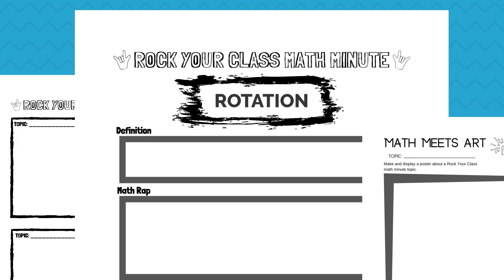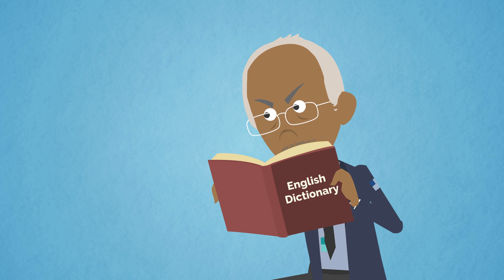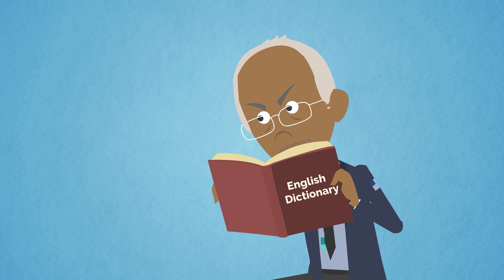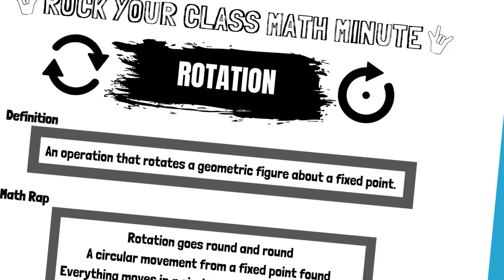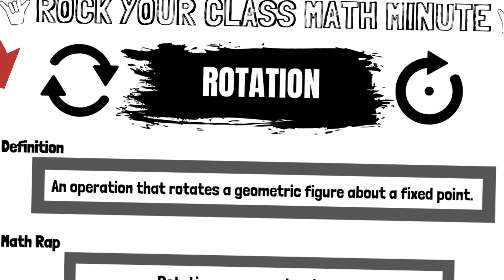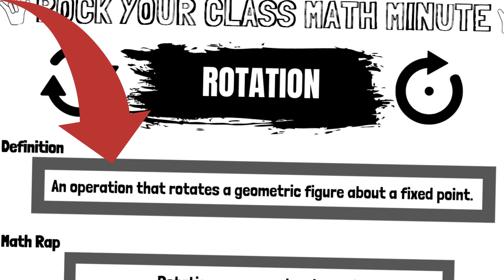Rotation. What does the dictionary say? An operation that rotates a geometric figure about a fixed point.